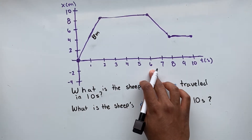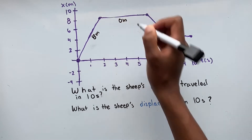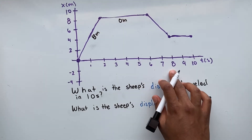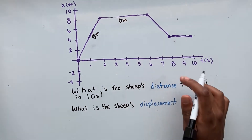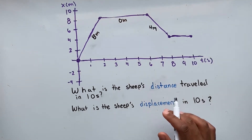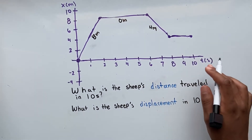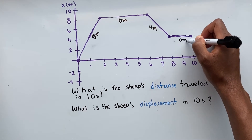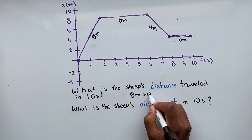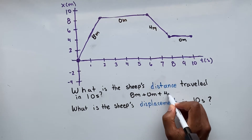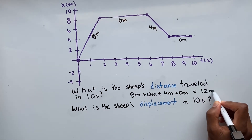From 2 to 6 seconds, our sheep remained at its position of 8, so the total distance traveled is 0 meters. From 6 to 8 seconds, our sheep changed its position from 8 to 4, so the total distance traveled is 4 meters. From 8 to 10 seconds, our sheep remained at position 4, so the total distance is 0 meters. Adding all values: 8 meters plus 0 meters plus 4 meters plus 0 meters gives us a total of 12 meters for our distance.